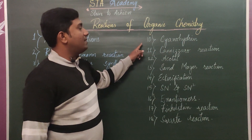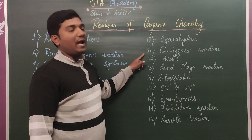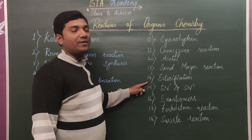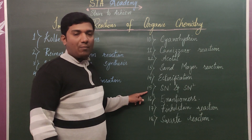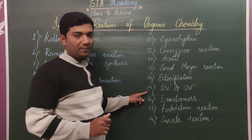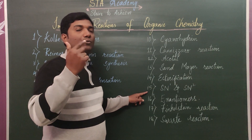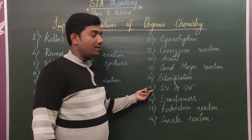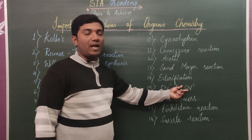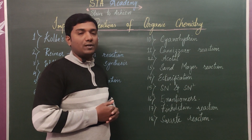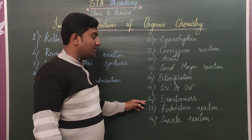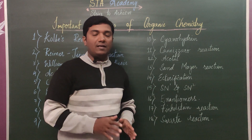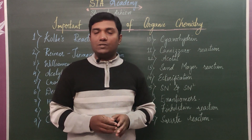Let us see the 10th one. 10th is Cyanohydrin. 11th is Cannizzaro reaction. 12th is Acetyl reaction. 13th is Sandmeyer reaction. 14th is Esterification. 15th, there is confusion among students about SN1 and SN2 reactions. SN1 reaction you have to do in two different ways: one is Stereochemical, another is Nucleophilic. If you are writing a board exam, just read SN1 and SN2 reactions. But if you are writing an entrance exam, go with the Nucleophilic substitution of SN1 and SN2. 16th is Enantiomers. 17th is Finkelstein reaction. 18th is Swartz reaction. These are 18 very important reactions of organic chemistry that give maximum marks.